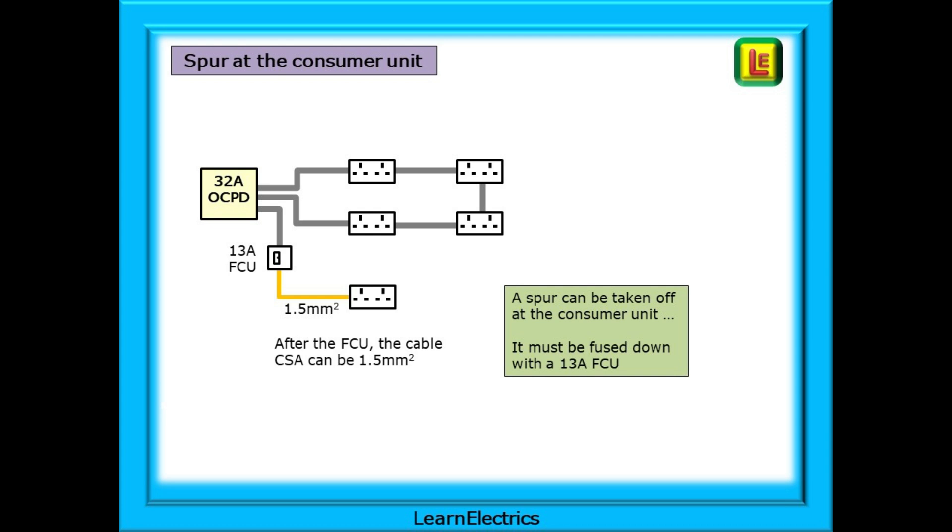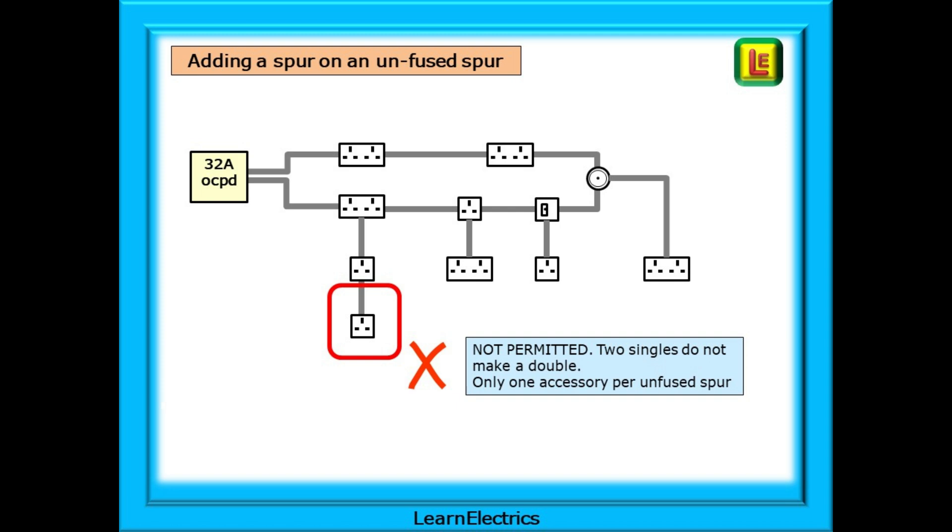We can also spur at the consumer unit, but it must be through a fused spur at 13 amps. A single 2.5mm cable from the socket direct to a 32 amp breaker is not allowed. As shown here by the orange wire after the FCU, the cable size can be reduced as it is protected by a 13 amp fuse in the FCU. Can we add a spur on a spur? If the spur off the ring is unfused, then the answer is no. We can have only one unfused spur per socket, and changing a double socket for two singles is not allowed in this situation either.